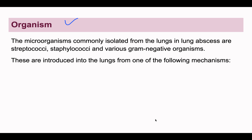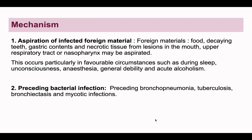There are various organisms involved in lung abscess: streptococci, staphylococci, and various other gram-negative organisms. Now, how are these organisms introduced into the lungs? There are some mechanisms by which these organisms reach the lung and produce lung abscess. The first mechanism is aspiration of infected foreign material.